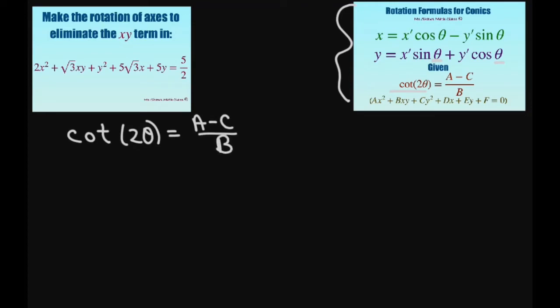And in our case our A is 2, our B is square root of 3, and our C is 1, looking at this standard form here. So this is going to give us 2 minus 1 divided by square root of 3, which equals 1 divided by square root of 3.